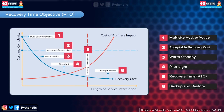What you see here is a cost and complexity versus length of service interruption graph. RTO is the maximum acceptable delay between interruption and restoration of service, but to give the user the best possible resolution, cost to business remains the biggest differentiator. Let me give you a small example to explain this graph.